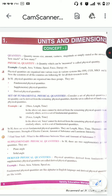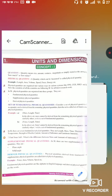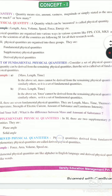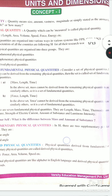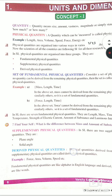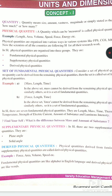For example, take mass, length, and time. In this set, mass cannot be derived from the remaining physical quantities, and similarly for the others, so it is a set of fundamental quantities. In SI, there are seven fundamental physical quantities: length, time, mass, thermodynamic temperature, strength of electric current, amount of substance, and luminous intensity.